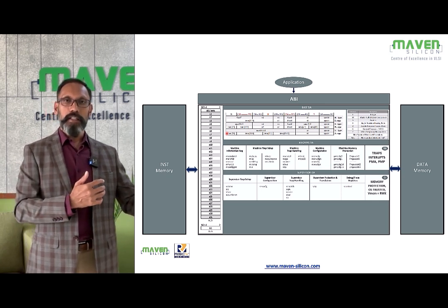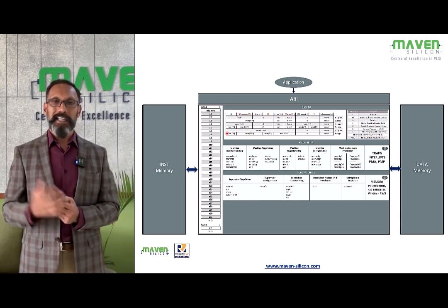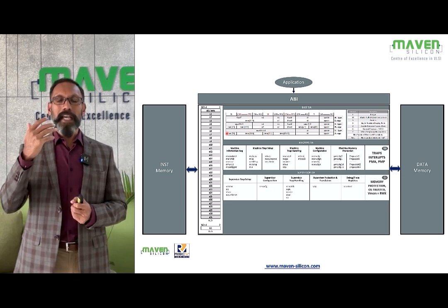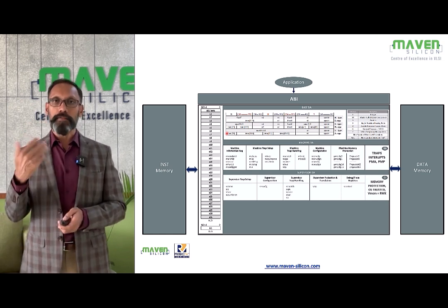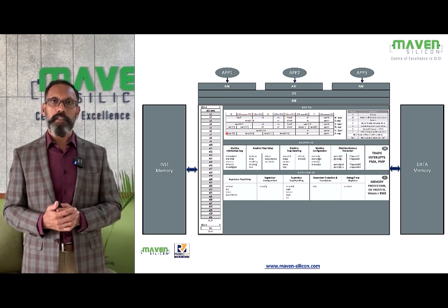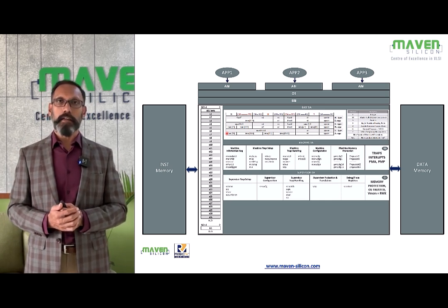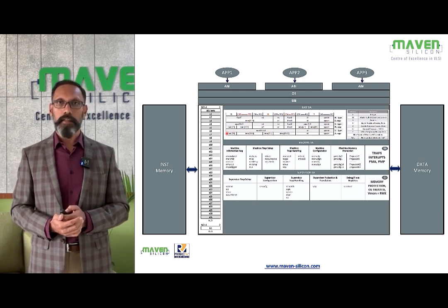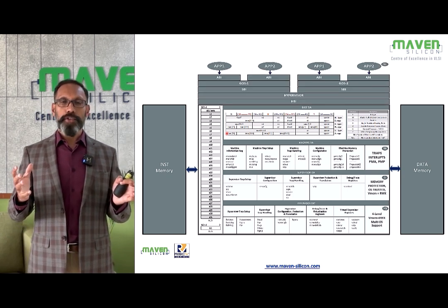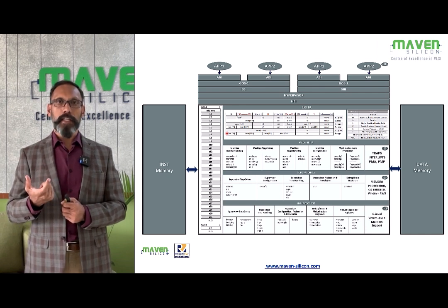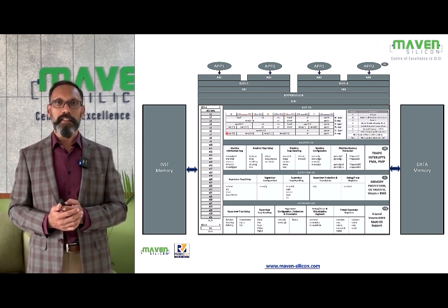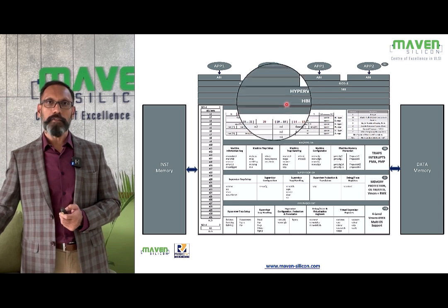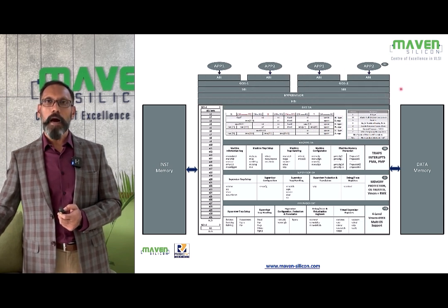For example, verification engineers dealing with IPs for desktops will have to verify virtual memory management and the page table translation process defined as part of the supervisor ISA. Embedded systems programmers need to understand both ABI — primarily for application development — and SBI, supervisor binary interface, to deal with the operating system they want to build. For hypervisor extension, they need to understand how to design complex IPs for hypervisors, dealing with HBI (hypervisor binary interface), SBI (supervisor binary interface), and ABI (application binary interface).